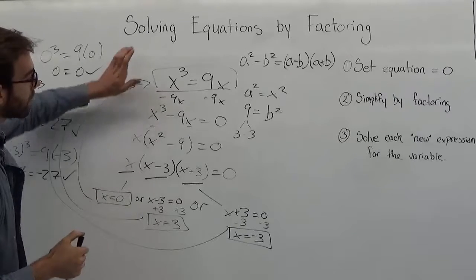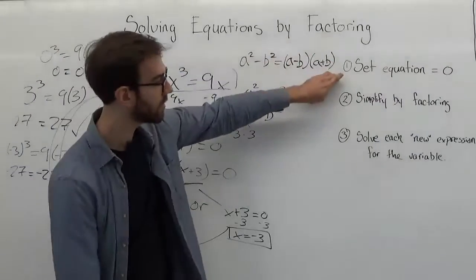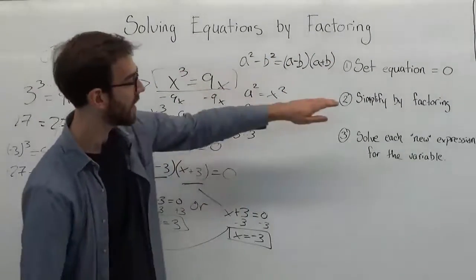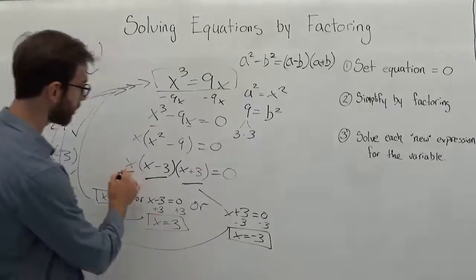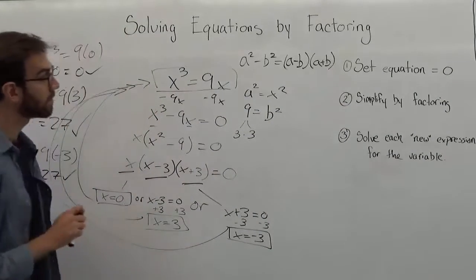So again, whenever you have a problem like this, you first want to set the equation equal to 0. Simplify that new equation by factoring. And then solve each of the new components for the missing variable. Thank you.